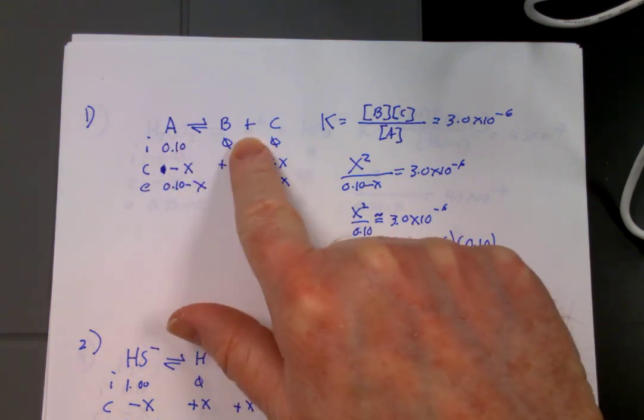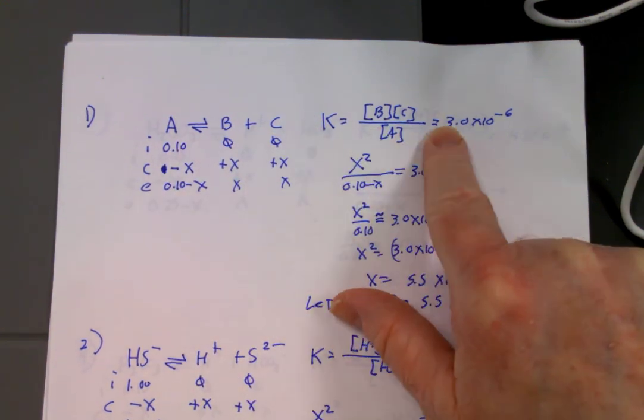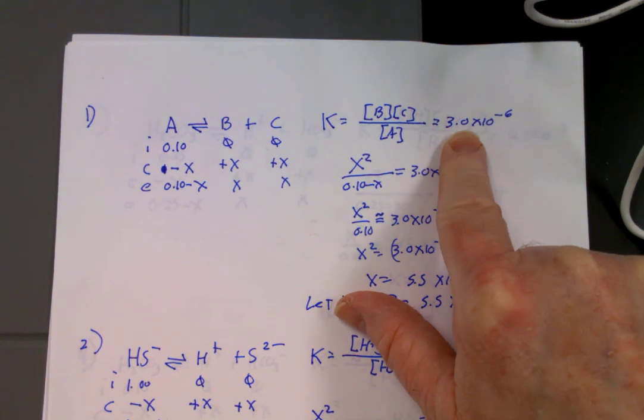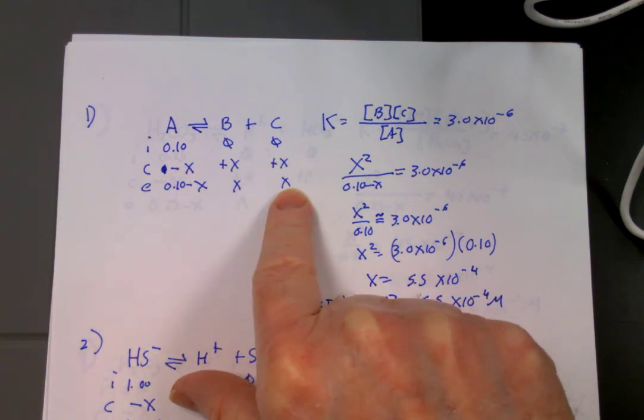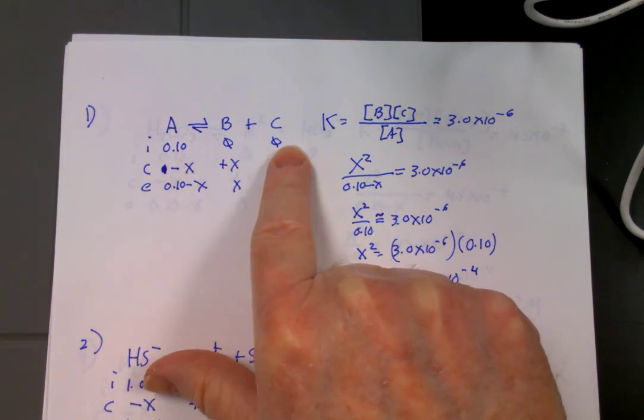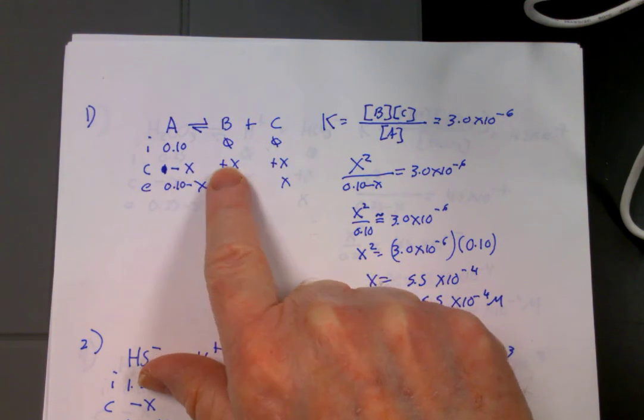Okay, write the reaction, write the K, it's a very small K, that's important to know, set up the icebox, fill it in 0.10, 0, and 0, minus x, plus x, and plus x are the changes.